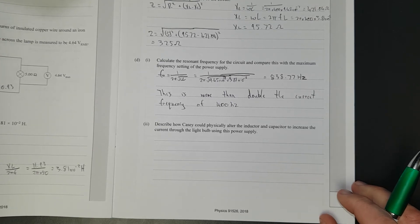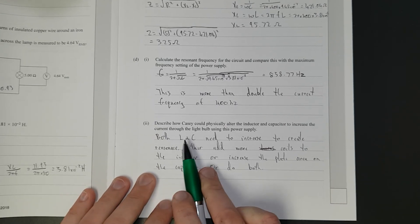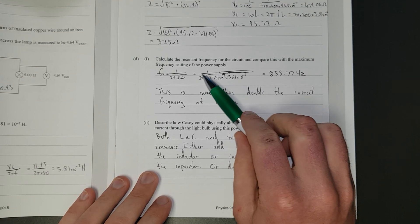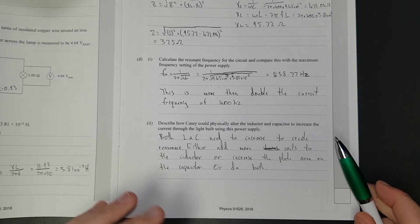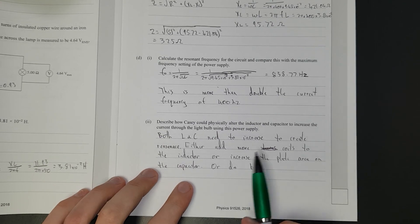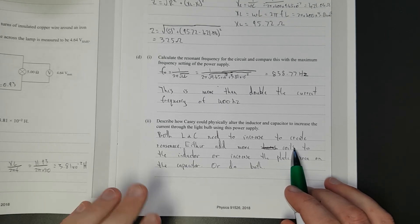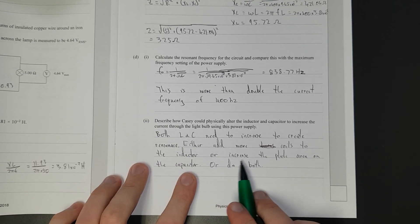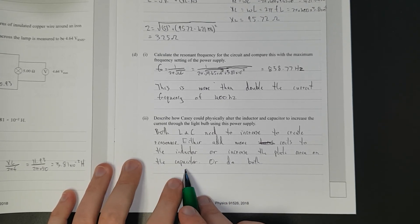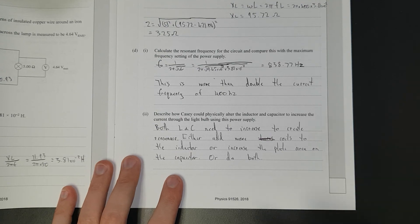Describe how Casey could physically alter the inductor and capacitor to increase both the current and the light bulb using this power supply. Right, so I said both the inductance and capacitance need to increase to create resonance. Basically you need to increase the denominator so it decreases the number on the outside. So you need to add more coils to the inductor or increase the plate area on the capacitor or do both. You could also change up what's inside the inductor, make it out of better iron, more pure iron. For the capacitor you could either increase the plate area, you could add a bit of dielectric, you could decrease the plate separation.